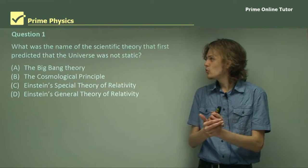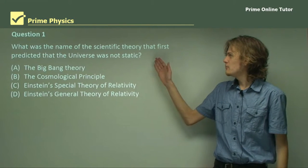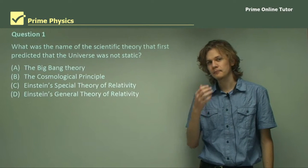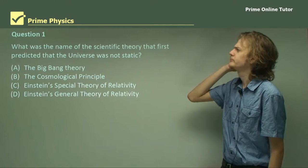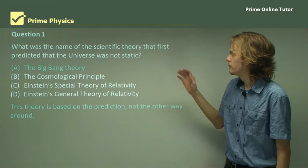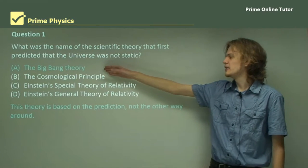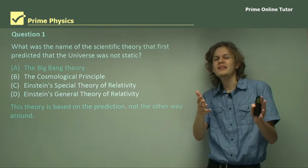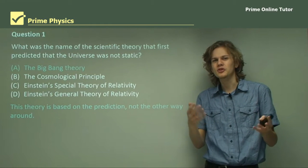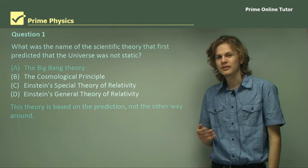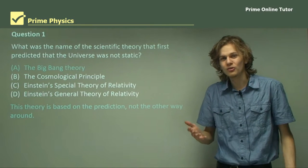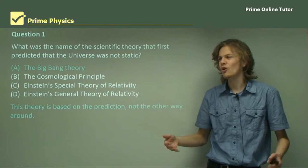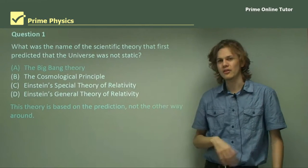So, let's go on to some questions. Question one. What was the name of the scientific theory that first predicted that the universe was not static? We have a few options here. Is it A, the Big Bang Theory? We haven't really learned about the Big Bang Theory yet, but it's not the theory that was used to predict that the universe wasn't static. If it was, we would have learned about it in this slideshow. The theory is, in fact, based on this prediction that the universe isn't static.